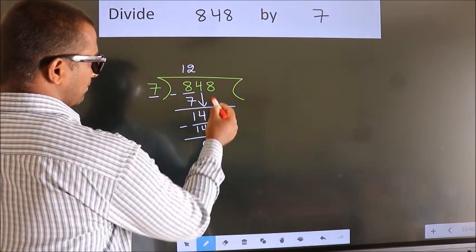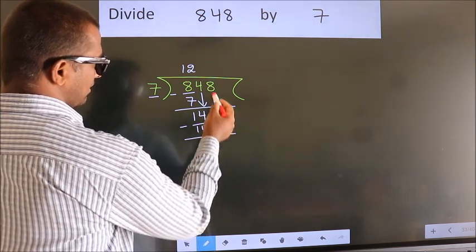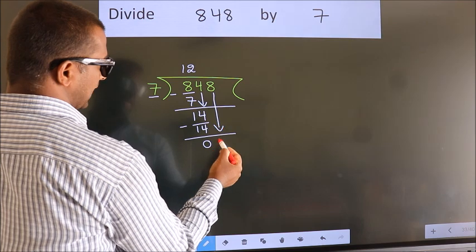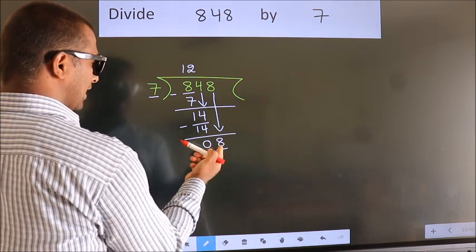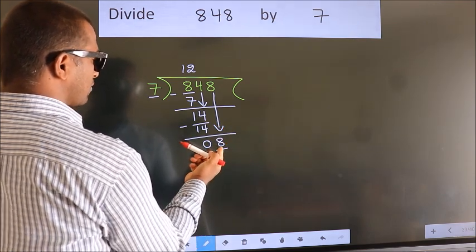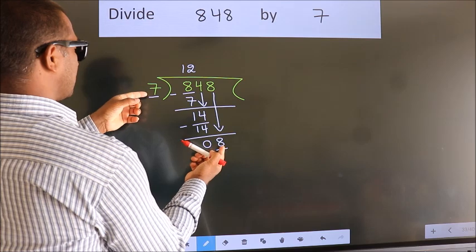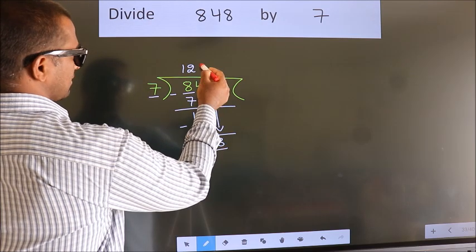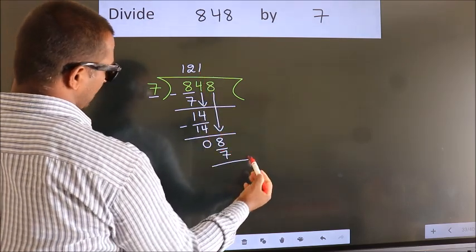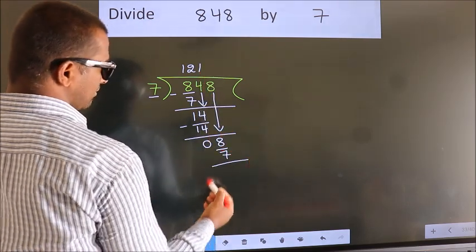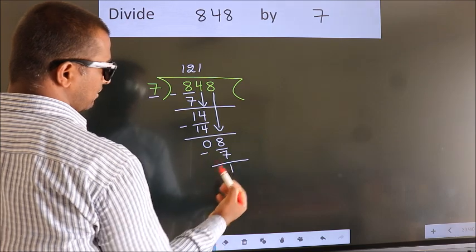After this, bring down the beside number. So 8 down. So 8. A number close to 8 in the 7 table is 7 once 7. Now we subtract. We get 1.